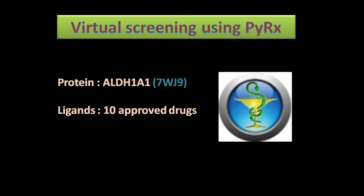Hello everyone, welcome to my YouTube channel. In this video I am going to explain how to perform virtual screening using PyRx. PyRx is a software which uses AutoDock 4 and AutoDock Vina for molecular docking. In AutoDock 4 or AutoDock Vina, the ligand molecule can be docked one at a time, but in PyRx the ligand molecules can be docked in batch mode — meaning more than one ligand molecule can be docked to the active site of a protein in a single run.